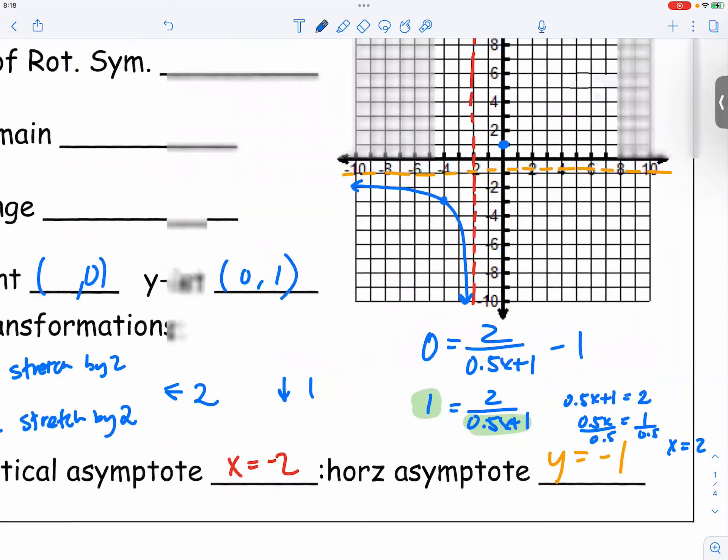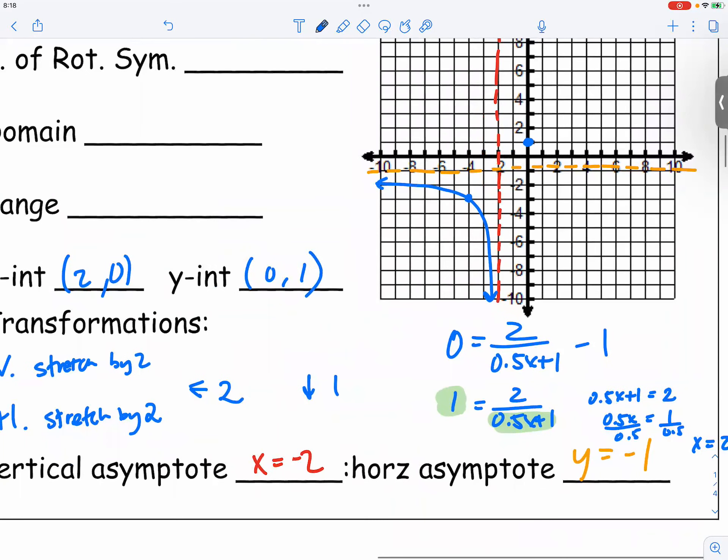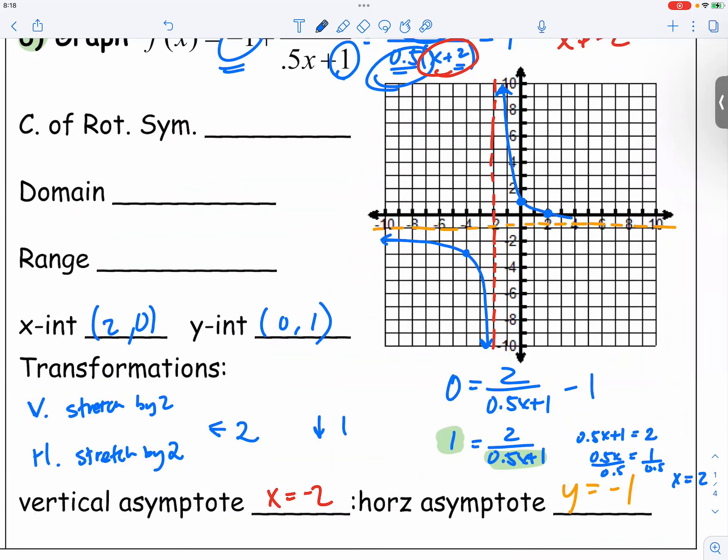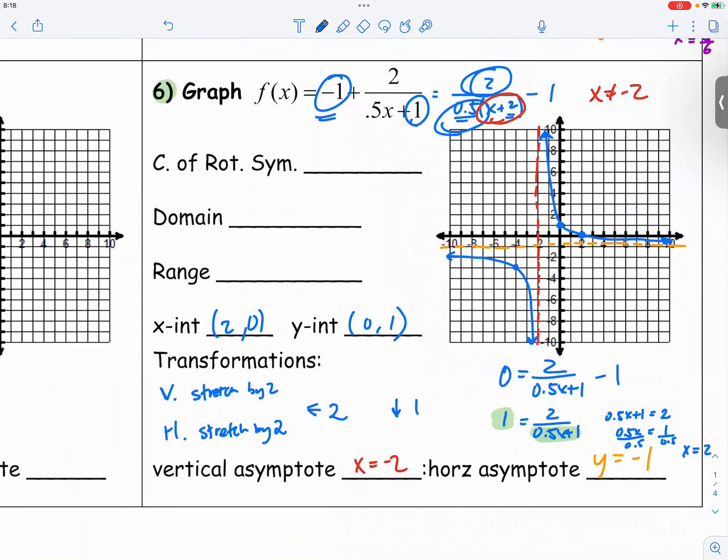So therefore, our x-intercept should be 2 comma 0. And so we have the right-hand side of the graph. Yay. Okay. And the center of rotational symmetry will be negative 2 comma negative 1.